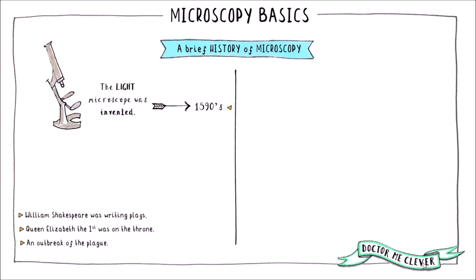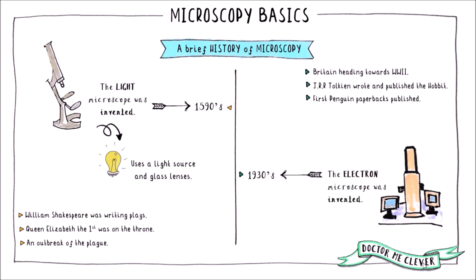Now these microscopes use light as an illuminating source and they also use glass lenses. Much later in the 1930s when Britain was heading towards another world war, Tolkien had just published The Hobbit and Penguin books had just come on the scene, the electron microscope was invented and it revolutionised research. These microscopes harness the power of electrons and electromagnetic lenses.